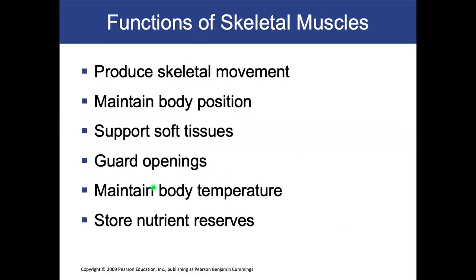What are the functions of skeletal muscle? It's to produce movement — that's the main one. Maintain body position, support soft tissues, guard openings like your mouth and eyes, maintain body temperature, and store nutrient reserves. Skeletal muscle stores glycogen.